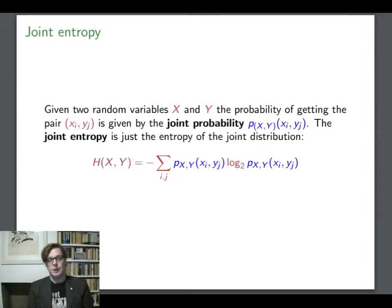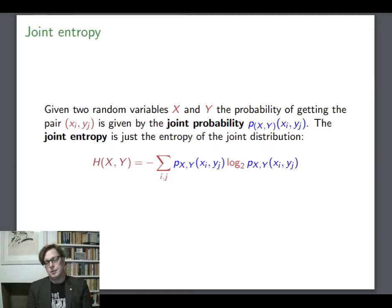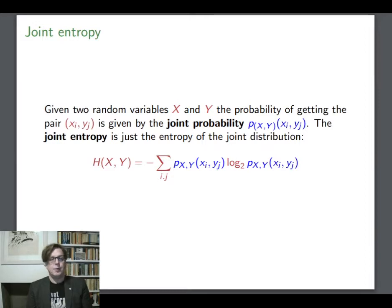As I said, it's nothing new. Before, we had a probability distribution on the outcomes for X. Now we have the random variable (X, Y) — the random variable made out of X and Y. So it's just the same thing: a probability distribution, albeit on the joint space. We substitute in the joint probability mass function and we get that the joint entropy H(X, Y) is minus the expected value of the log of P(Xi, Yj), or minus the sum over the possible outcomes i, j of P(Xi, Yj) log P(Xi, Yj).